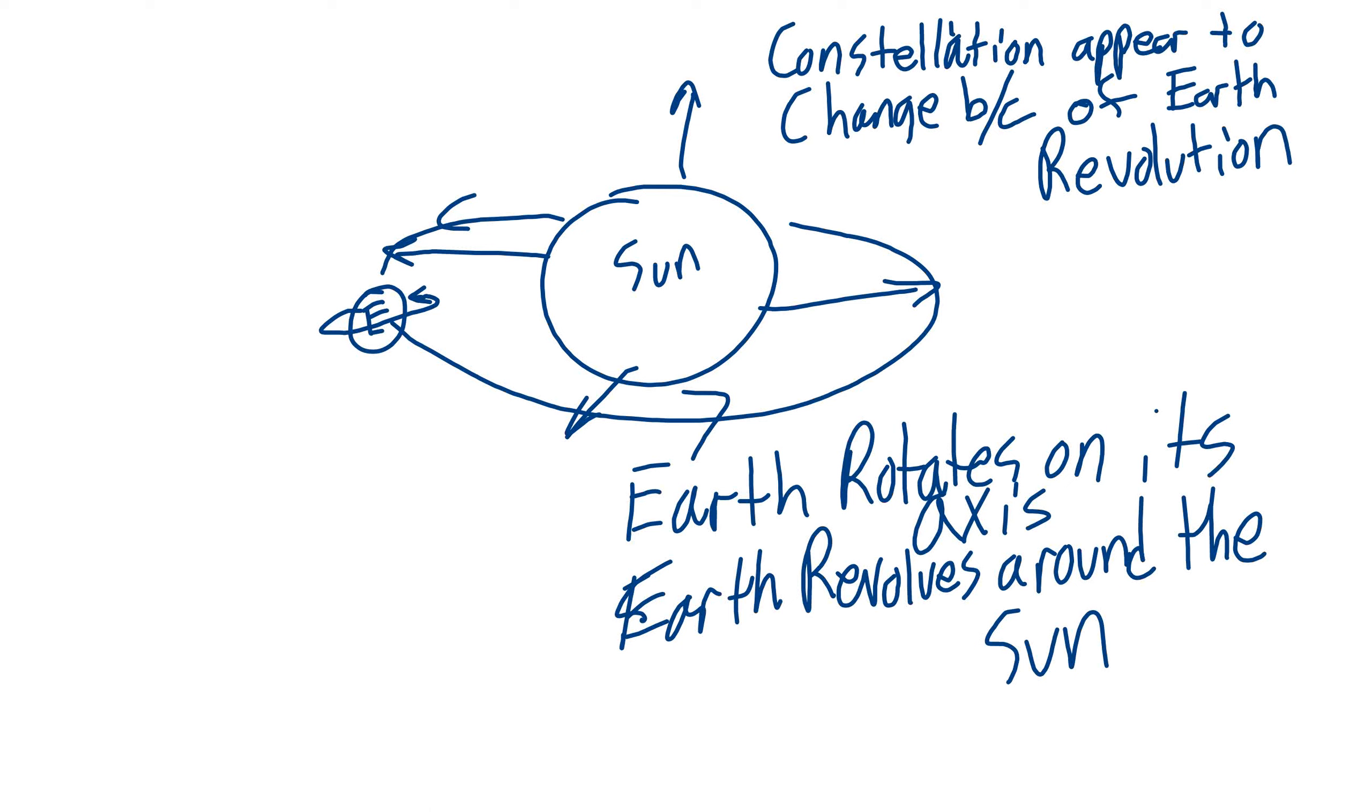And why are we talking about this? Because when you look up in the sky, you see certain constellations. You see the stars in certain patterns that humans have identified as constellations. Those constellations change throughout the year in a predictable way.